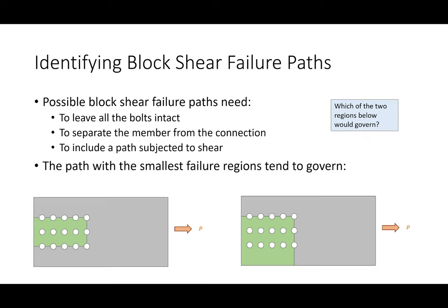Today I really want to focus on identifying potential block shear failure paths. Whenever you're looking at a potential failure path — trying to figure out which block of steel will rip out — it needs to satisfy a few rules: it must leave all of the bolts intact, it must separate the member from the connection, and it must include a path subject to shear.